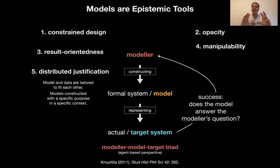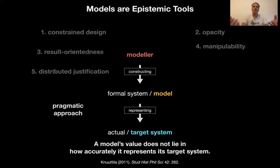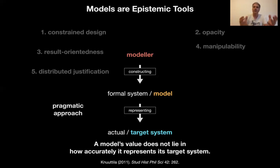What I want you to remember is not the details but these characteristics of models: constraint design, opacity, result-orientedness, manipulability, and distributed justification. The design — you work with what is given; opacity — you don't always question the tools you have; result-orientedness — tools are for something; manipulability — tools are to manipulate; distributed justification — tools fit their context. When you have a hammer, everything is a nail. All these characteristics point at one thing: models are tools.